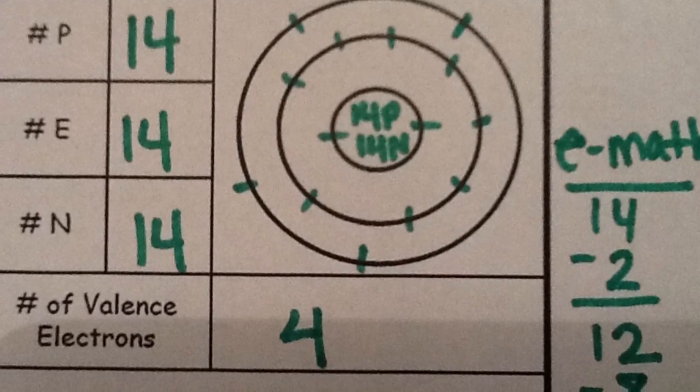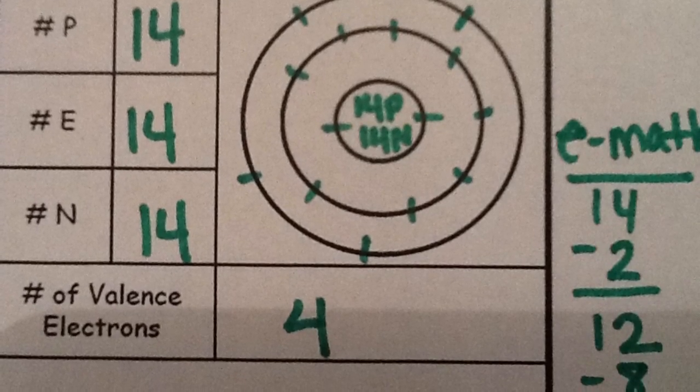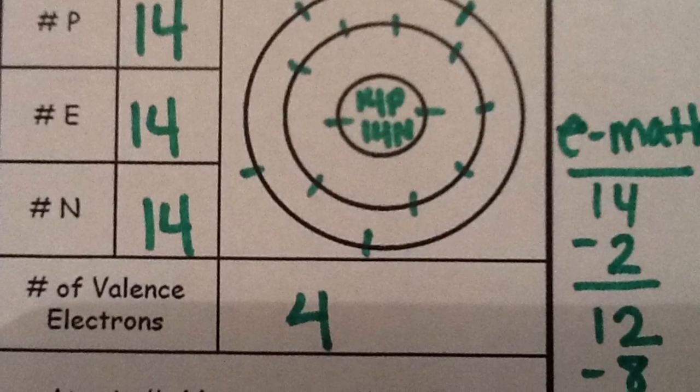The electrons in the outermost energy level are your valence electrons. So silicon has 4 valence electrons.